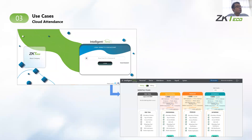We have a few use cases for the platform. Cloud Attendance allows for collecting user punch-in details either through devices or through applications and generates attendance reports. These can then be used by organizations to run their payroll system or address other business problems.